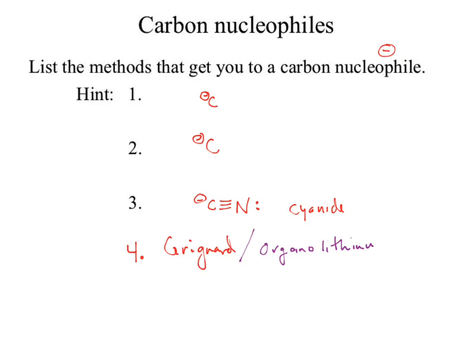We would need a stupidly strong base to make the kinetic version of these. LDA can be used to make an enolate: take LDA with a ketone, remove the acidic hydrogen to make a negative carbon. That negative carbon can now attack. So enolate chemistry gets us a negative carbon. The third one is acetylide. Enolates, acetylides, and cyanides are all carbon nucleophiles you've seen before.